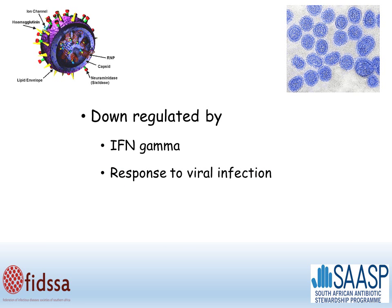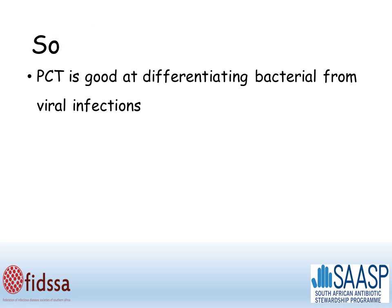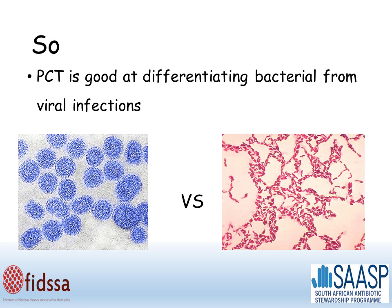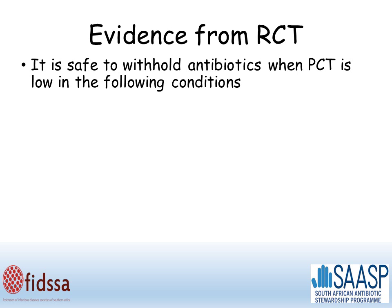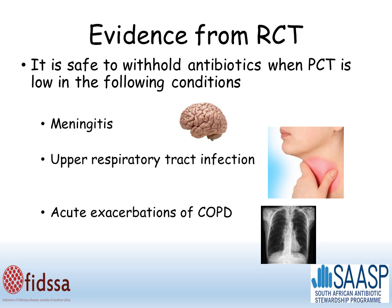An important point about procalcitonin is that it's down-regulated by interferon gamma, which is produced in response to viral infection. This means that PCT is good at differentiating viral infections from bacterial infections. There's evidence from randomized controlled trials for the use of PCT, and specifically it's safe to withhold antibiotics when PCT is low in meningitis, upper respiratory tract infection, and acute exacerbations of COPD.